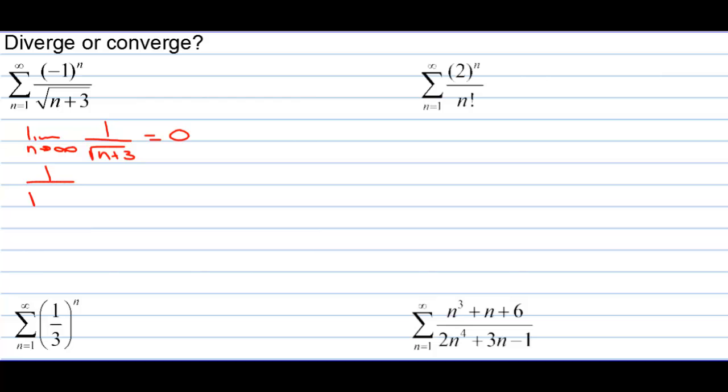And then can we confidently say this, 1 over the square root of n plus 4 is less than 1 over the square root of n plus 3? Can we confidently say that or would we have to take the derivative of this and show the derivative is negative? What do we think? Are we confident with that? Yeah, we are. No problem. So it converges by alternating series test.